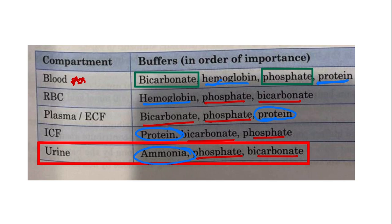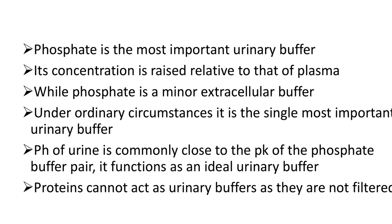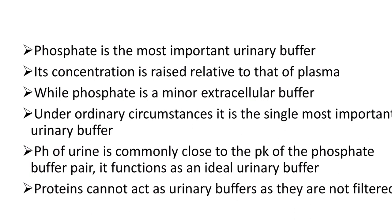In blood, protein buffer applies since protein is present; hemoglobin buffer applies in RBCs. In ECF and ICF, protein buffer applies. In urine, ammonia production occurs, so there is an ammonia buffer. Now, the key point: phosphate is the most important urinary buffer. This is a very important point.